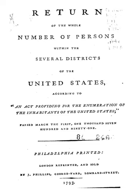Thomas Jefferson, then the Secretary of State, directed Marshals to collect data from all 13 states — Connecticut, Delaware, Georgia, Maryland, Massachusetts, New Hampshire, New Jersey, New York, North Carolina, Pennsylvania, Rhode Island, South Carolina, and Virginia — and from the Southwest Territory. The census was not conducted in Vermont until 1791, after that state's admission to the Union as the 14th state on March 4 of that year.